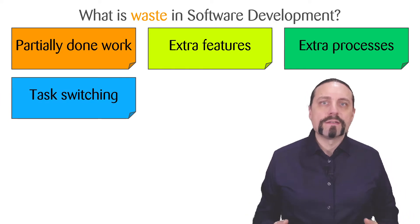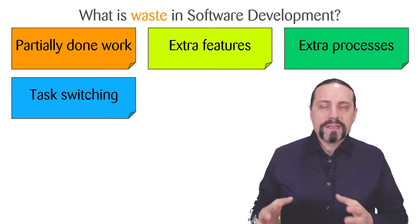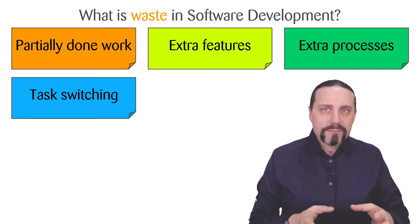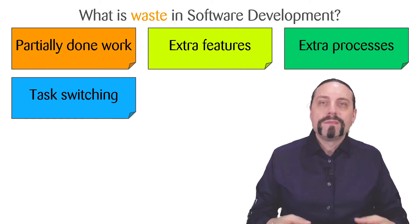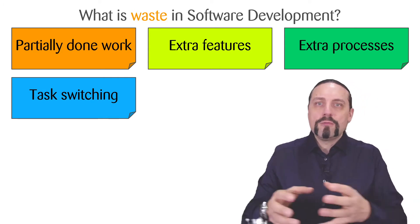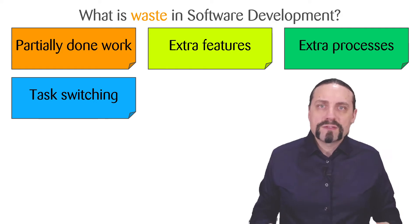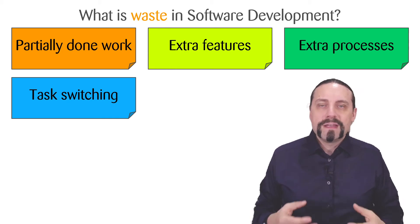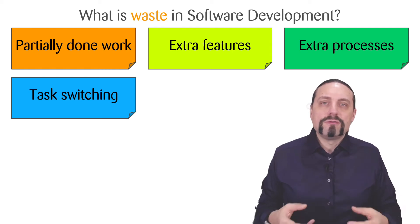Task switching is the fourth type of waste. It happens when we are doing something and get interrupted by a colleague or another task, forcing us to concentrate on a second thing before going back to the previous one. This causes waste because we need a lot of time to load and reload all the information in our brain.